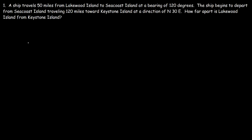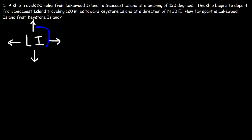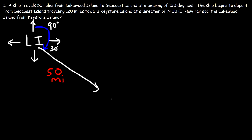So let's start with Lakewood Island — I'm going to call it LI. This is north, east, south, west. The ship travels 50 miles from Lakewood Island to Seacoast Island with a bearing of 120. The direction is not stated, so we're going to start with the north line. This is 90, and this is about 120. So if this is 90, then this portion here is 30. It travels 50 miles, and the ship arrives at Seacoast Island.